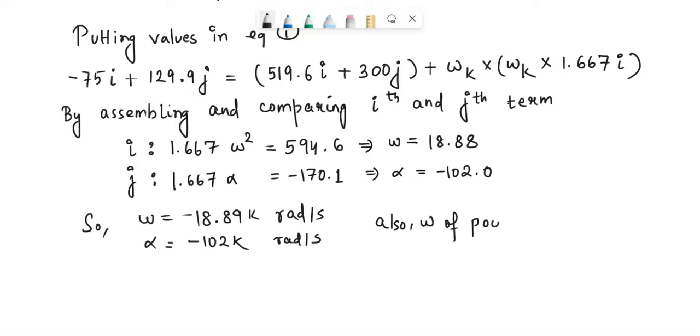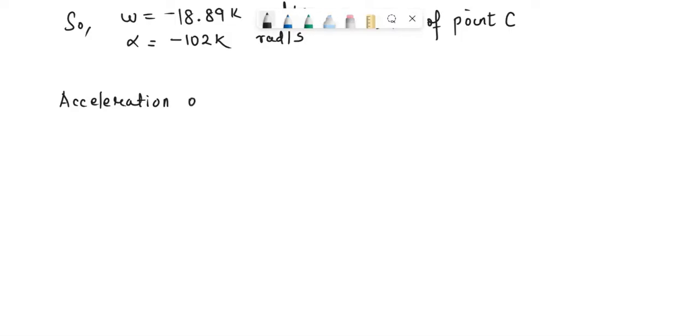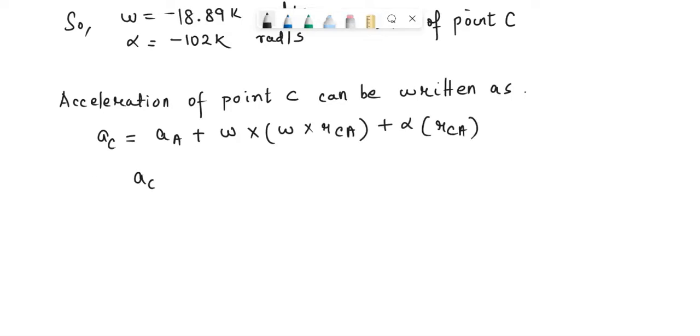Acceleration of point C can be written as AC = AA + W×(W×RCA) + alpha×RCA, which equals 2.64i + 434.6j ft/s². Hence this is our final answer.